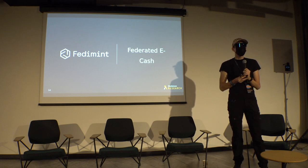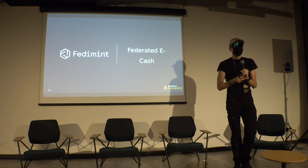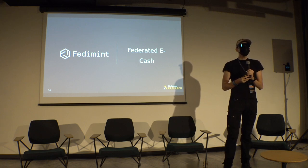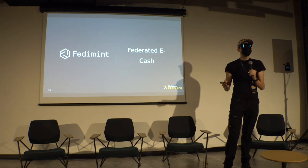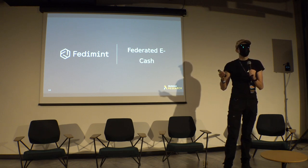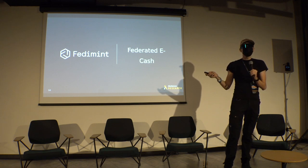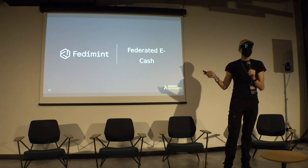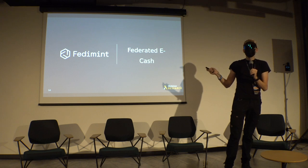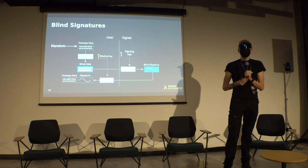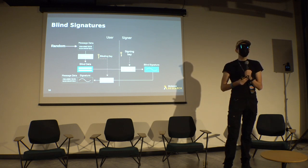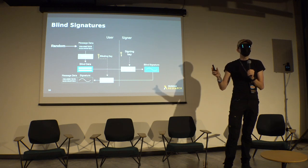How do we leverage these technologies in Fedimint? Fedimint is a federated e-cash mint — essentially a scaling mechanism for Bitcoin, a privacy mechanism, and when interconnected with Lightning, a really interoperable, private Lightning wallet. What it all builds on is something called blind signatures. A blind signature is a way to acquire a signature on a message without revealing the message to the signer.